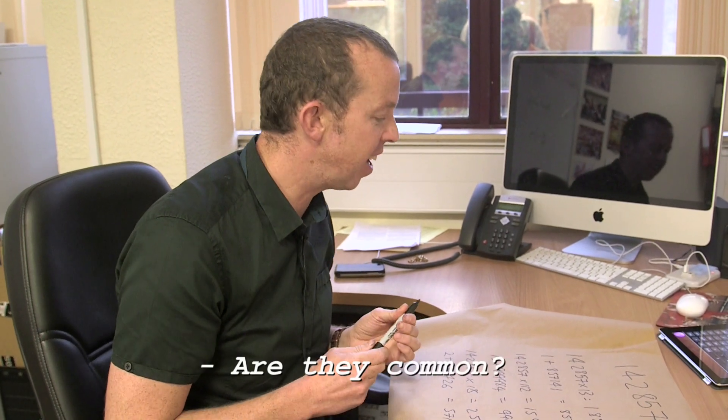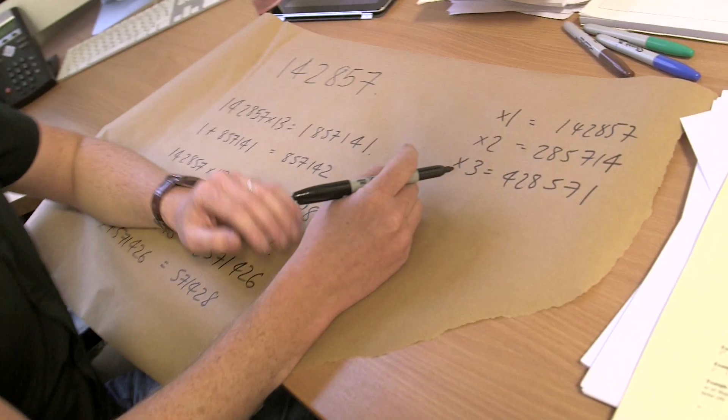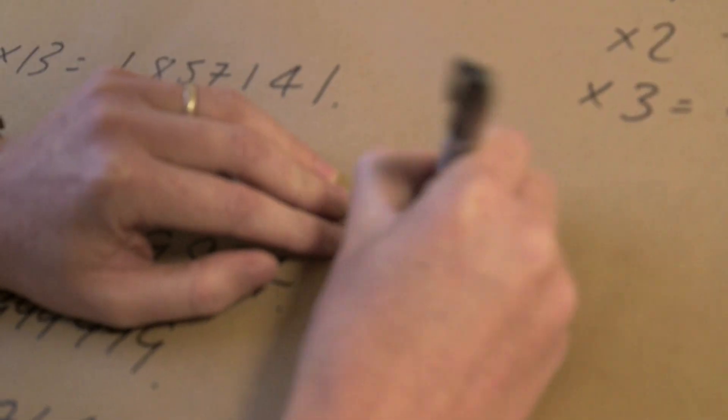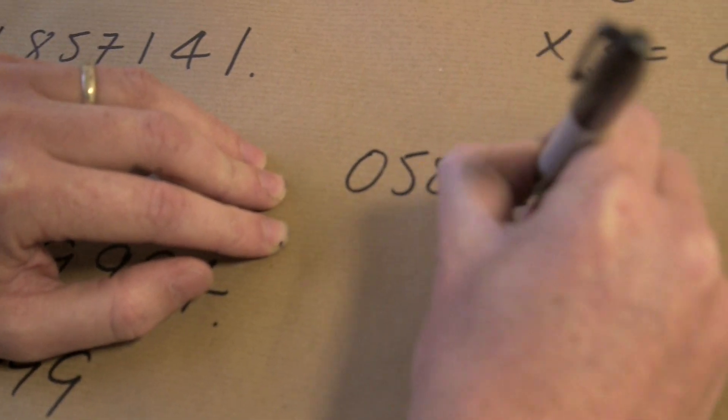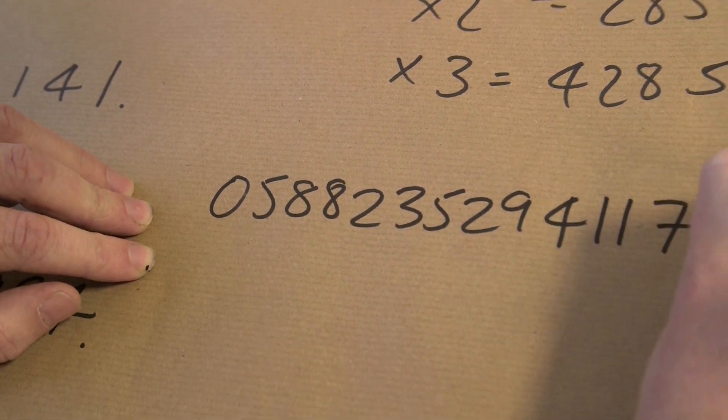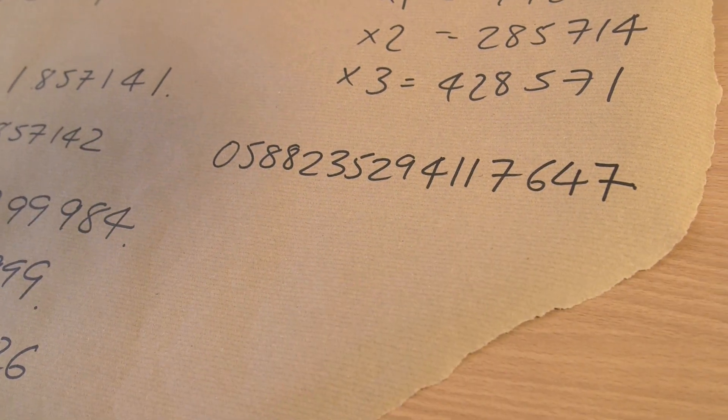This is an example of a cyclic number, in fact. A common. Right. Not particularly. So this is the only one that doesn't begin in zero. The next one, actually, after this one, is zero, five, eight, eight, two, three, five, two, nine, four, one, one, seven, six, four, seven.